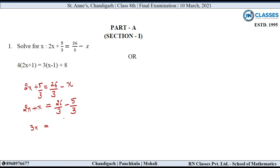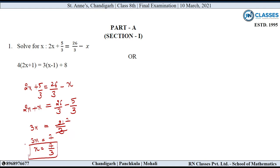So left-hand side equals this. This will be 21 by 3, so after cancellation, 3x is equal to 7. So here x will be 7 upon 3. So this is x.